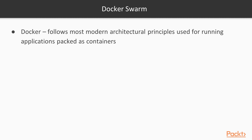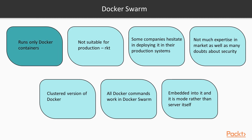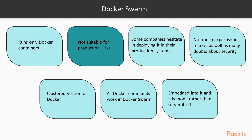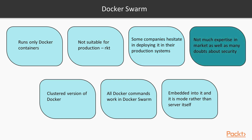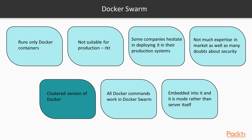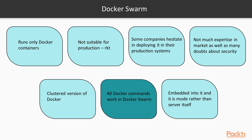Now let's look at Docker Swarm. Docker is a fantastic tool that follows the most modern architectural principles used for running applications packed as containers. Docker Swarm runs only Docker containers, ignoring other technologies at the moment that are not suitable for production, such as RKT. Even Docker is quite new to the scene, to the point that some companies hesitate in deploying it in their production systems. There is not so much expertise in the market, as well as many doubts about security or how Docker works in general. Docker Swarm is the clustered version of Docker. All the Docker commands work in Docker Swarm, so we can federate our hardware without actually taking care of the hardware itself. Just add nodes to the pool of resources and Swarm will take care of them, leveraging the way we build our systems purely to containers.